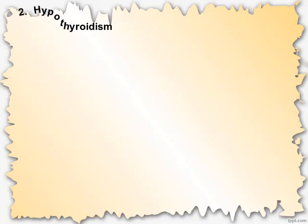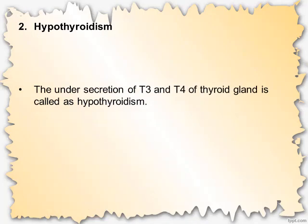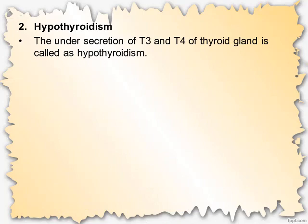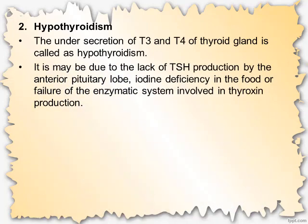Abnormality number two: hypothyroidism. The under-secretion of T3 and T4 from the thyroid gland is called hypothyroidism. It may be due to lack of TSH production by the anterior pituitary lobe, iodine deficiency in the blood, or failure of the enzymatic system involved in thyroxine production.